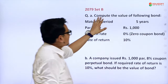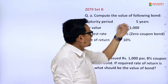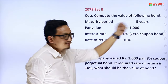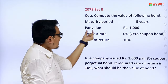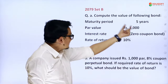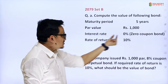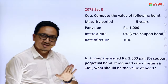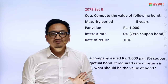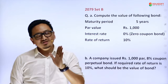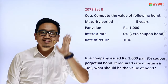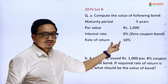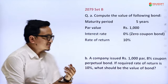From 2079 Set B: Compute the value of the following bond. Maturity period is 5 years. Par value is 1000. Interest rate (coupon rate) is 0% — it is a zero coupon bond. Rate of return kd is 10%.